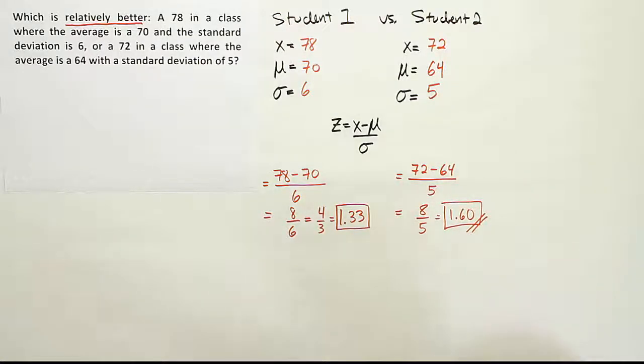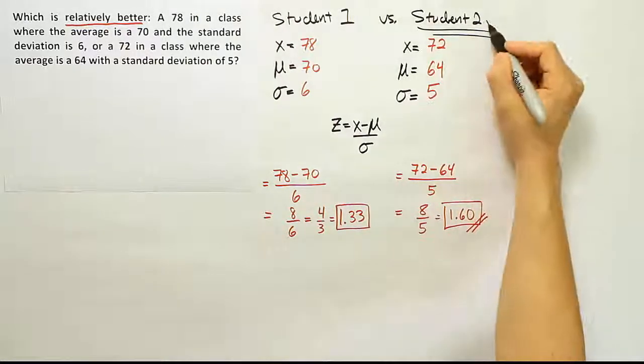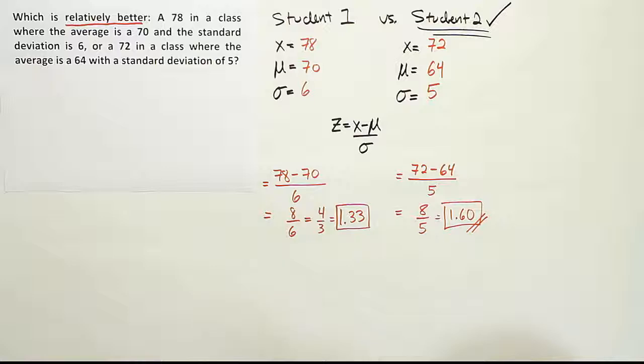Okay, so when I look at these two scores, I see that 1.6 is higher than 1.33. Even if it's just a little bit higher, it's still higher. So in this case, our winner is student 2. He's got the better grade, the better performance in the two classes.